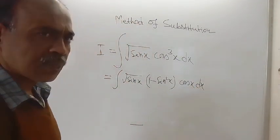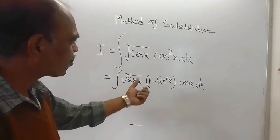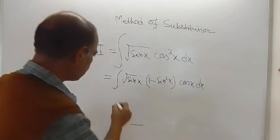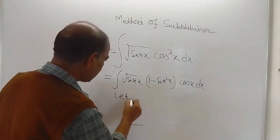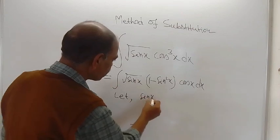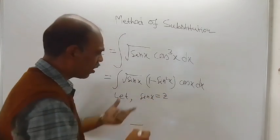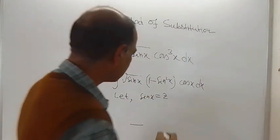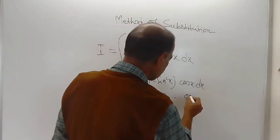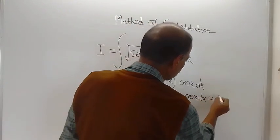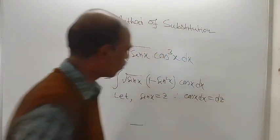Now, what will be the substitution? If you assume sin x is equal to z. So let sin x equal z. And now integrate—sorry, differentiate both sides of this. So on differentiation, what we are getting is cos x dx is equal to dz.